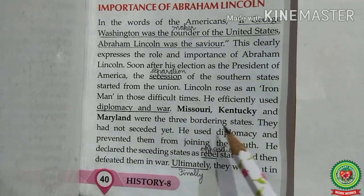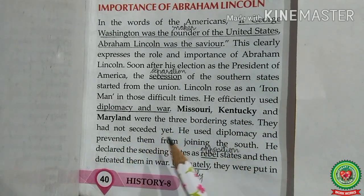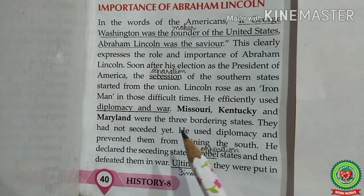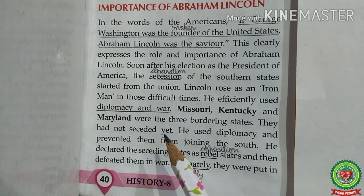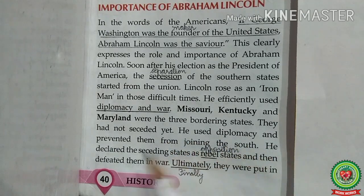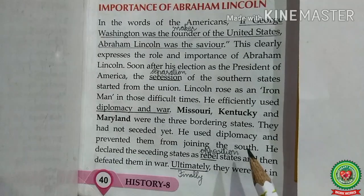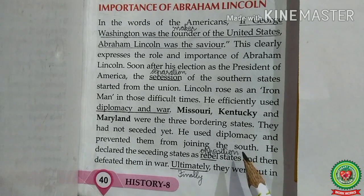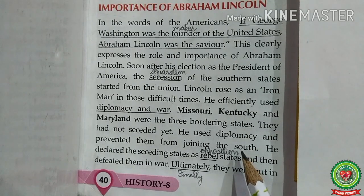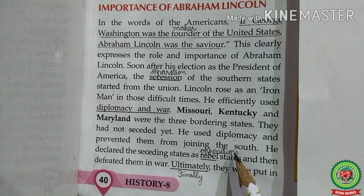Missouri, Kentucky, and Maryland were the three bordering states that had not yet seceded from the Union. Lincoln used diplomacy and prevented them from joining the South, knowing that these border states were vital to the success of the Union. He used tactful ways to keep these border states, and finally these states played an important role in the Union's victory, giving the Union the advantage in troops, factories, and money.